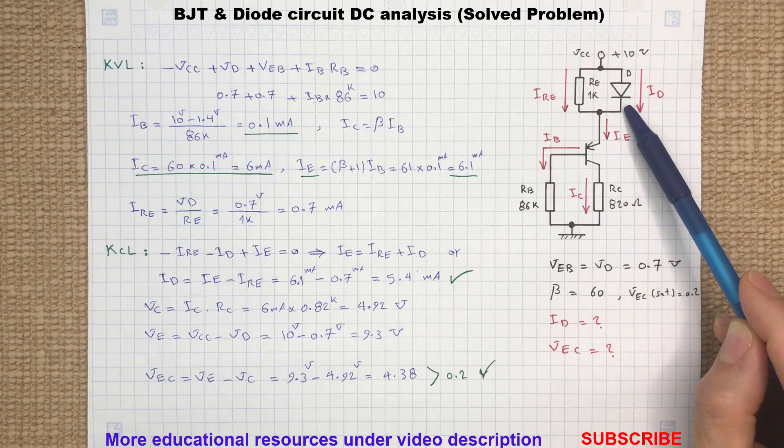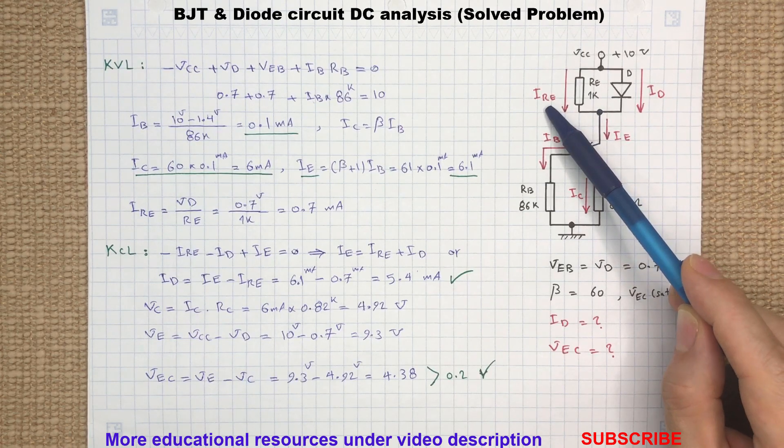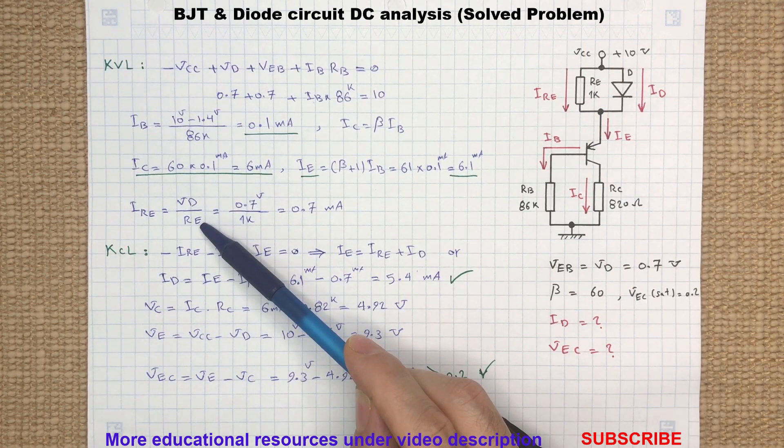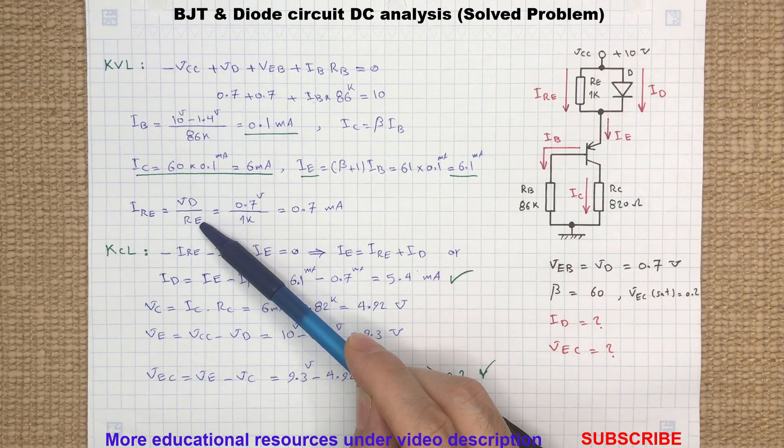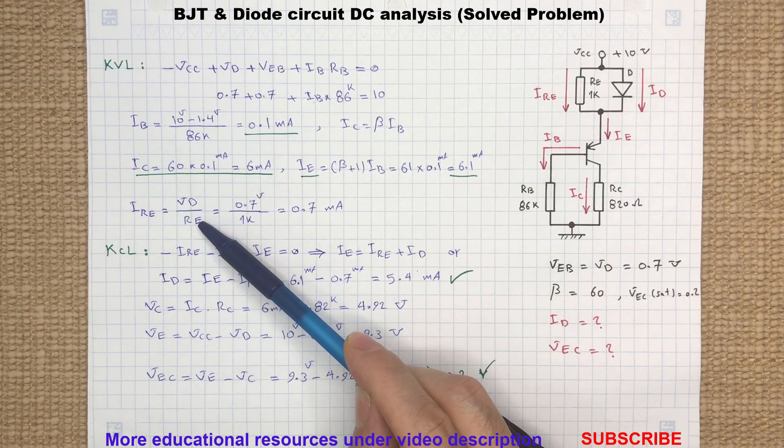Assuming the diode is forward biased, we can calculate the current flowing through the resistor RAE. The current IRE will be the voltage drop across the diode, which is in parallel with the resistor RE, divided by RAE.